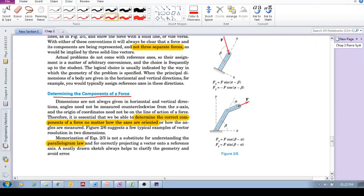Dimensions are not always given. So say now you've got some structure, and there's a force being applied to that structure. Dimensions are not always given in horizontal and vertical directions. Angles need not be measured counterclockwise. So you don't always have to measure them counterclockwise from the x-axis. And the origin of coordinates need not be on the line of action of a force.